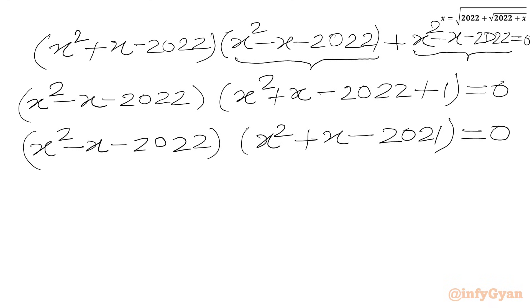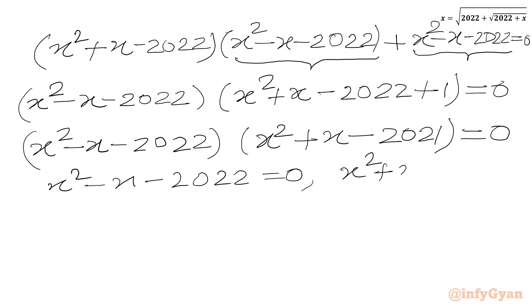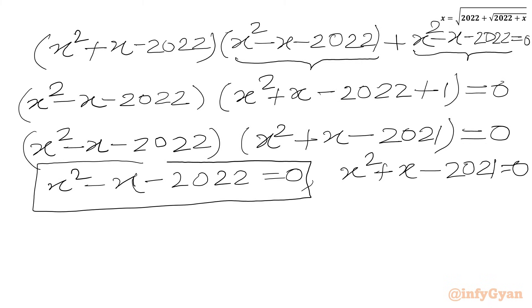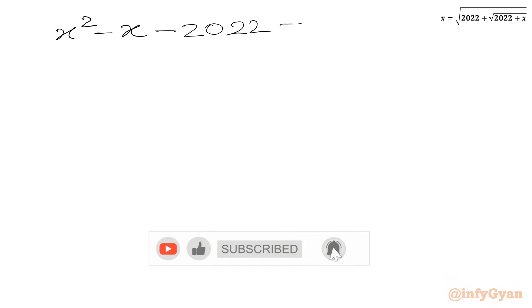Now we will use the zero product rule. So either X squared minus X minus 2022 equals 0, or X squared plus X minus 2021 equals 0. We are going to solve these two quadratic equations. Let's begin with the first equation: X squared minus X minus 2022 equals 0.